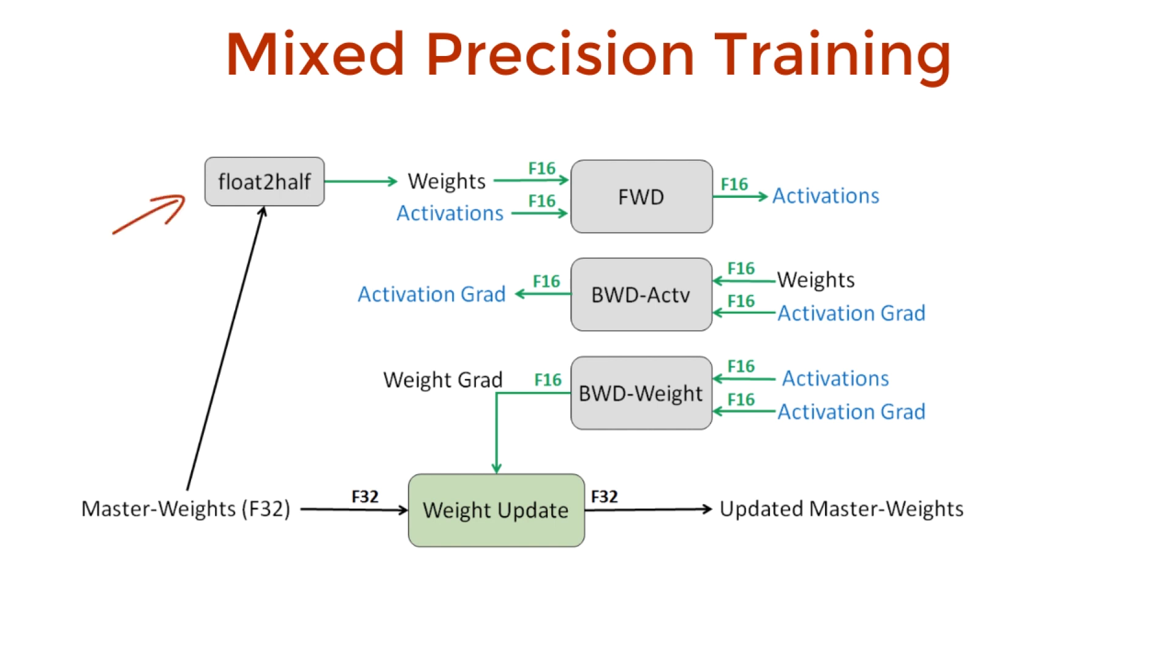Then we convert the 32-bit to a 16-bit precision. Then we perform the forward propagation step with all the arithmetic operations. And once the forward propagation part is complete, a loss is computed. Then scale this loss by multiplying it by some constant.